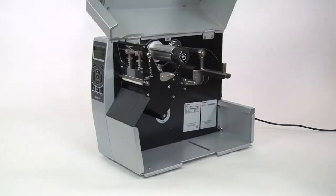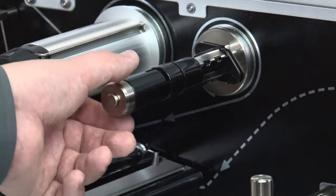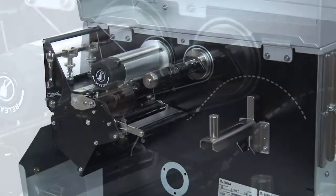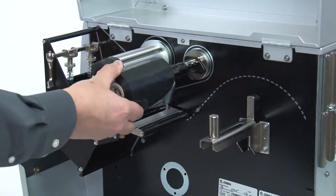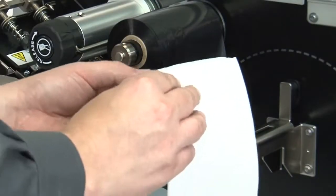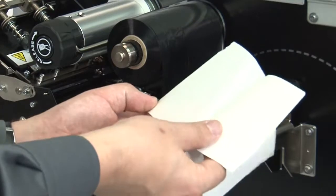Open the media door. Align the segments of the ribbon supply spindle and place the roll of ribbon on the ribbon supply spindle with the loose end unrolling clockwise. Tear off a strip of media and peel a label from the media.